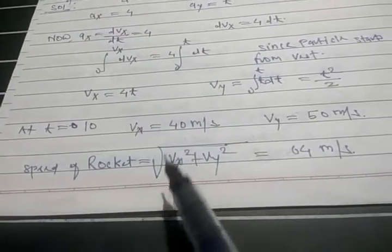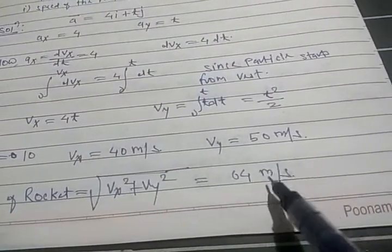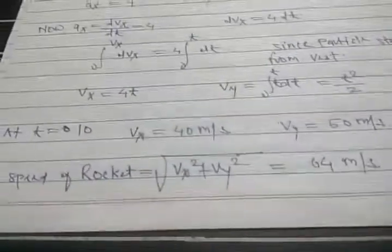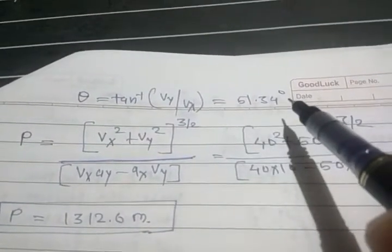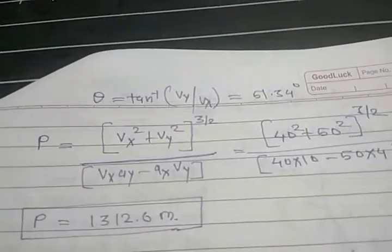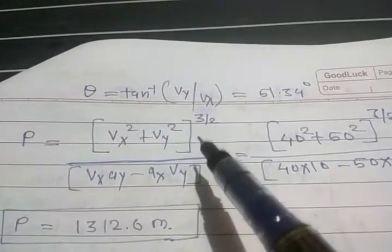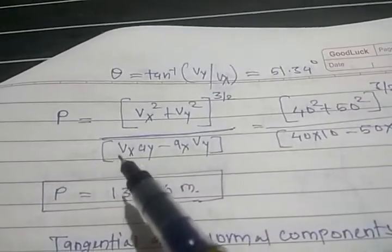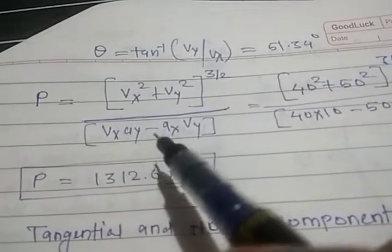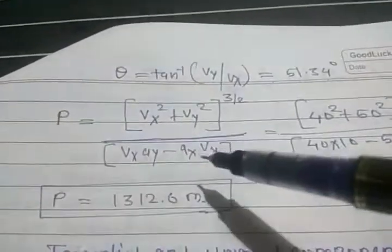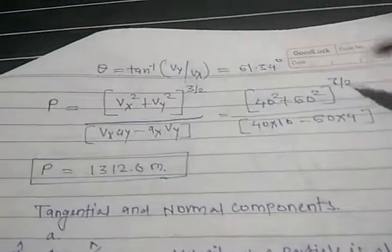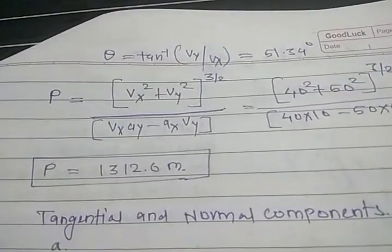Speed of the rocket equals √(vx² + vy²) equals √(40² + 50²) equals 64 meters per second. Next, theta equals arctan(vy/vx) equals 51.34 degrees. Using the curvature formula ρ equals (vx² + vy²)^(3/2) divided by (vx·ay minus ax·vy), which is the same as the earlier formula just written as ρ instead of 1/ρ, we get ρ equals 12.6 meters.